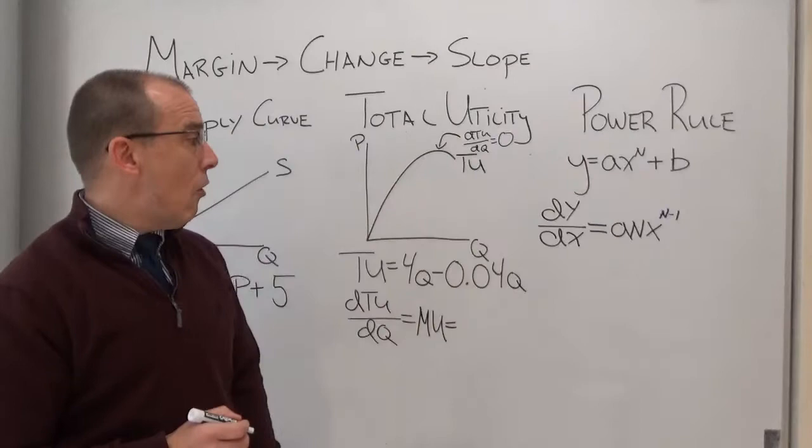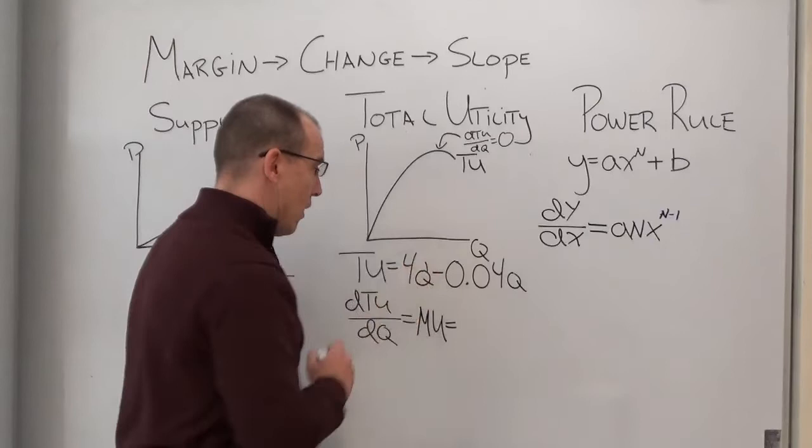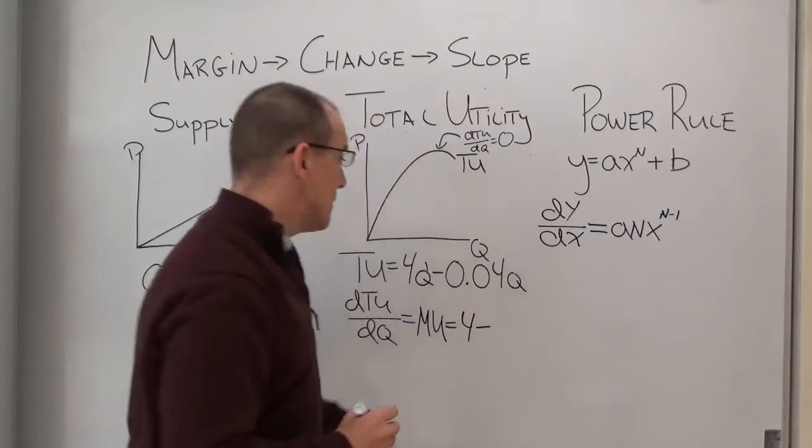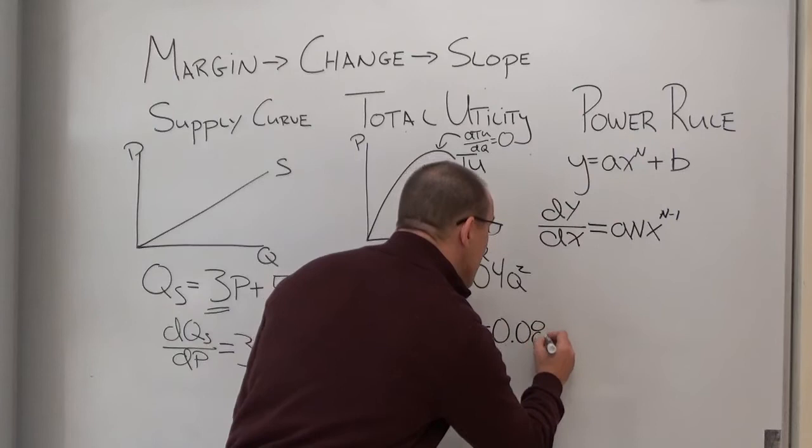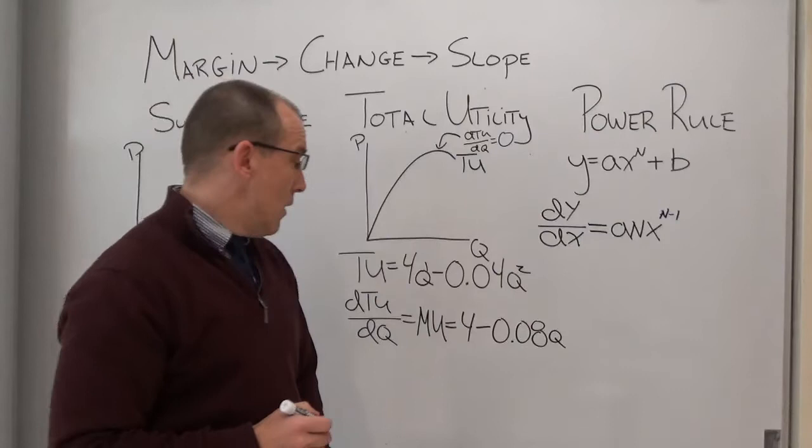To get this, all we do is use our power rule. This is q to the 1. So this simply becomes 4 minus, this should have been squared. This becomes 0.08q because the 2 comes down and we subtract 1 from the q.